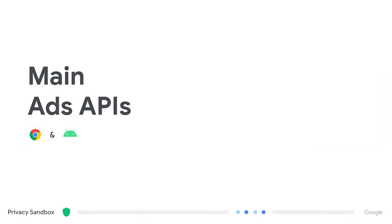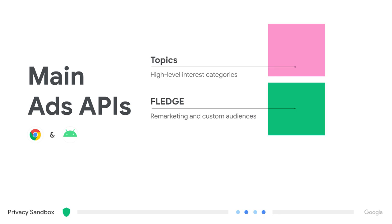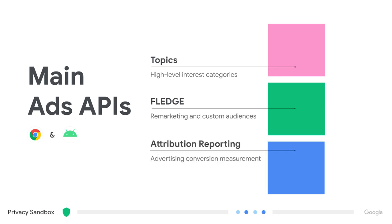I'm here to tell you what's going on with the three big ads APIs we've been working on for the Privacy Sandbox: Topics, Fledge, and the Attribution Reporting API. We generally expect that they will be used as building blocks to create advertising solutions, both in combination with each other, along with contextual and first-party data.